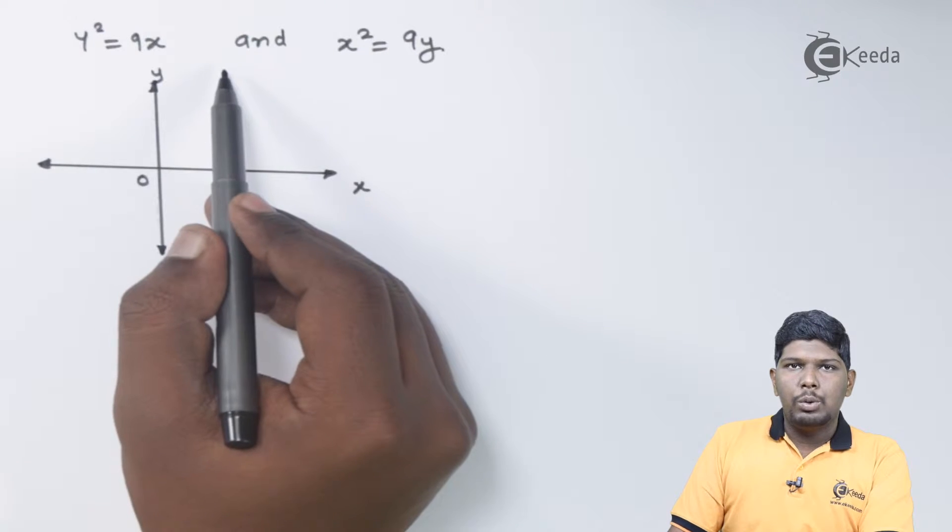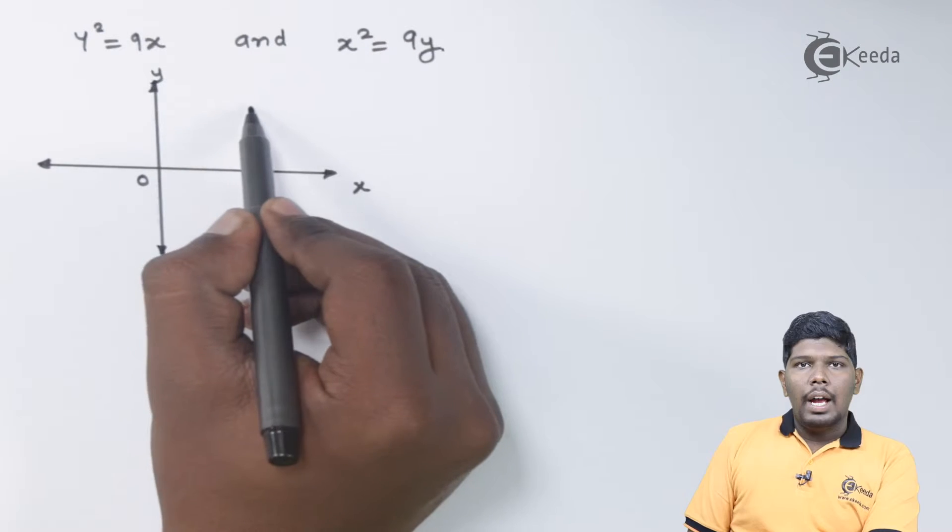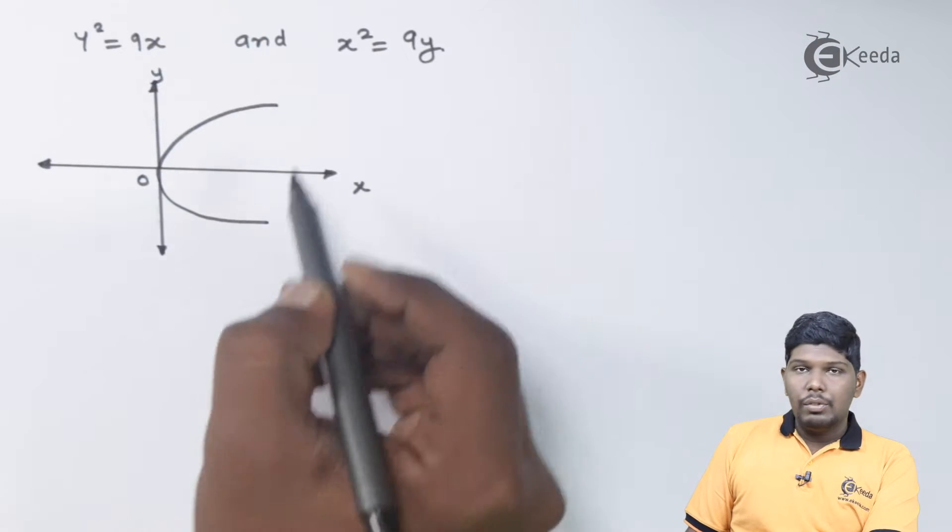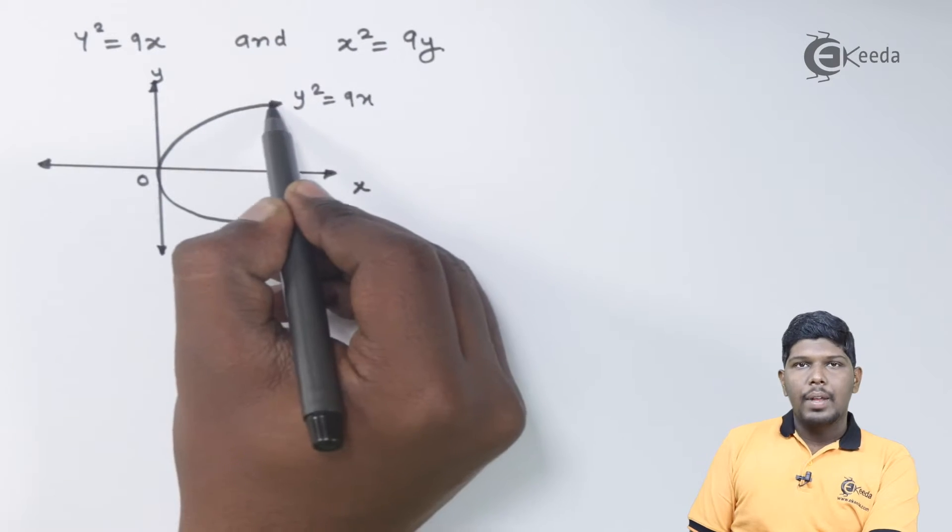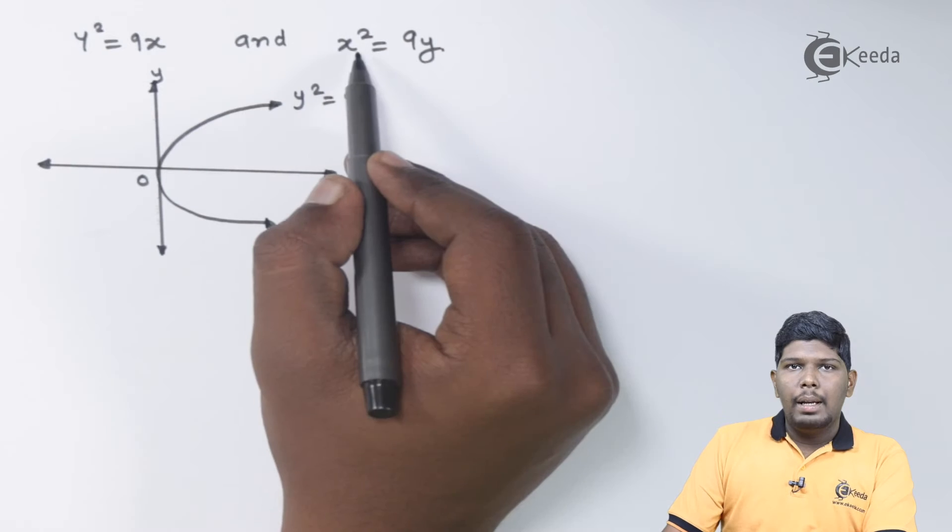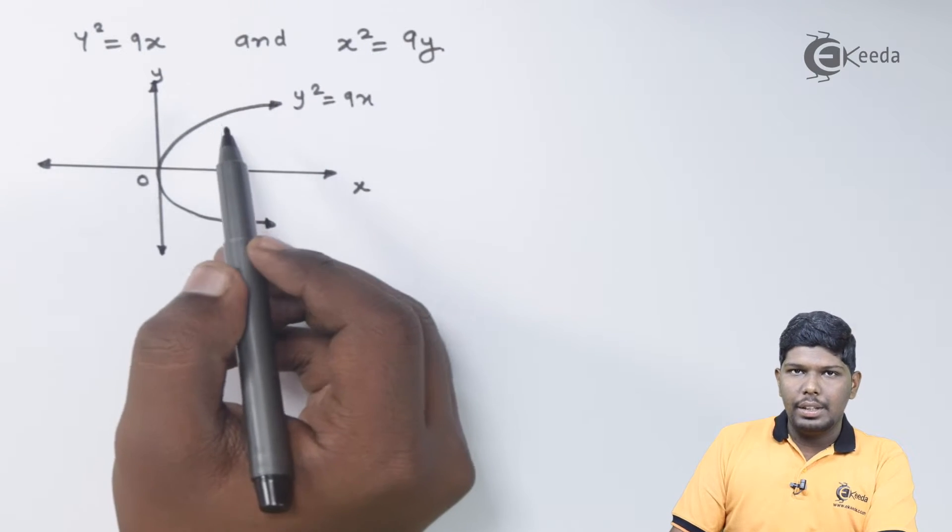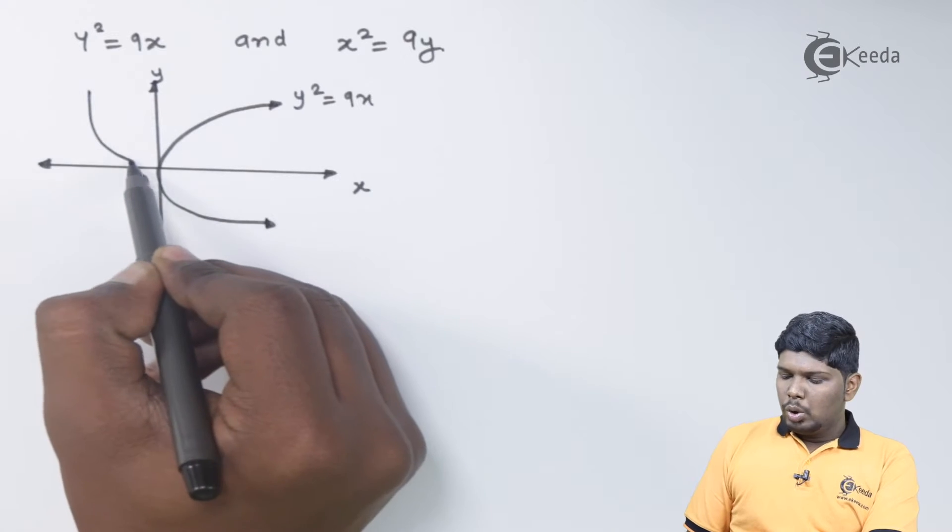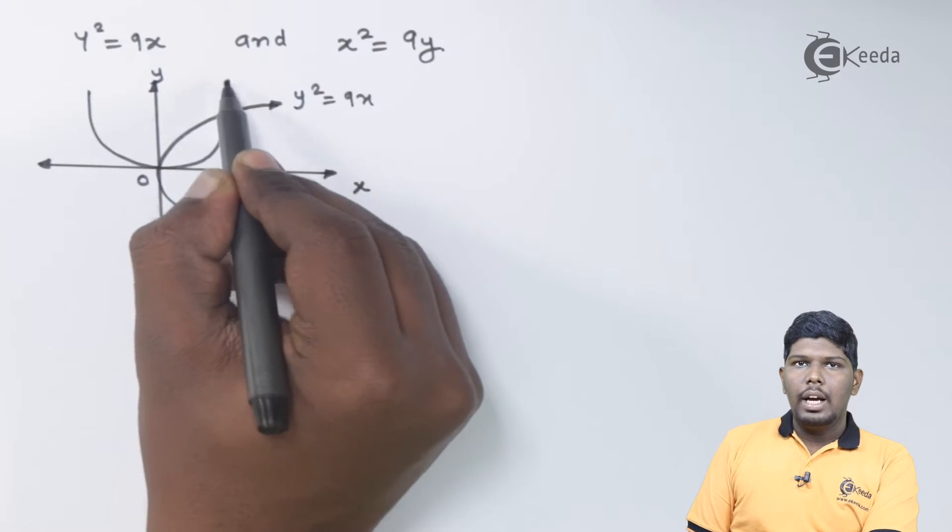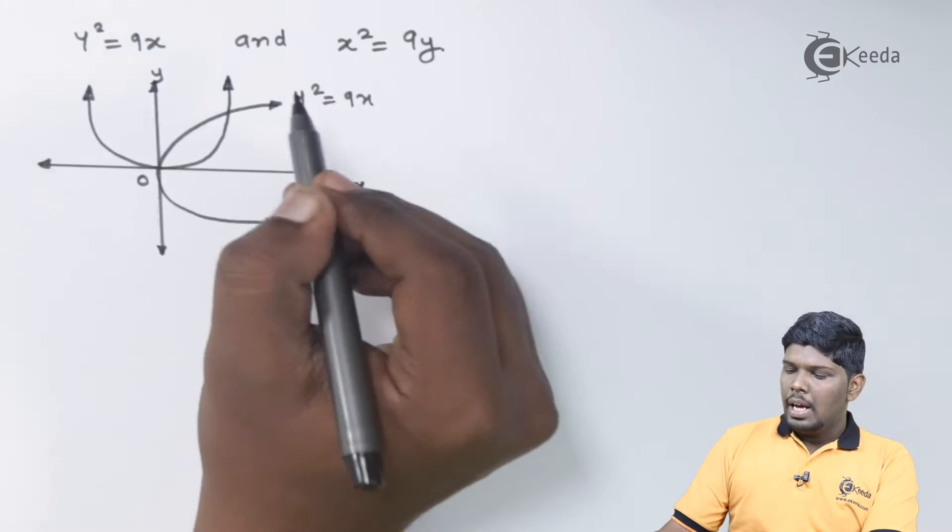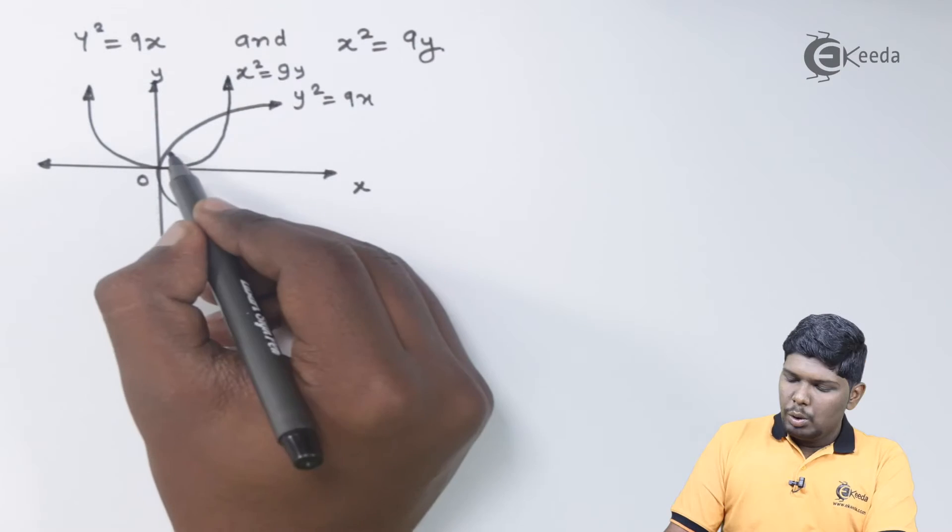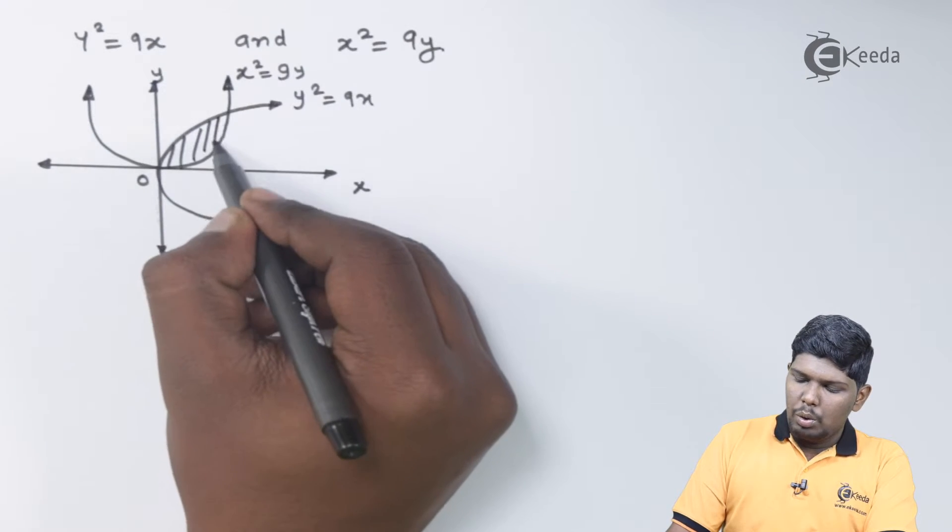The parabola y square is equal to 9x, and the parabola x square is equal to 9y will be in positive y axis direction. So this is the region between the two curves.